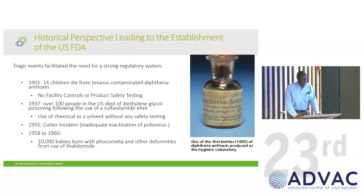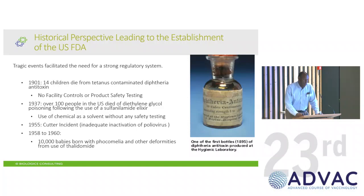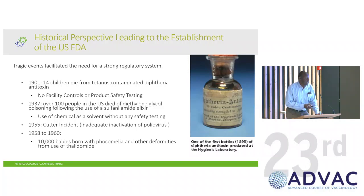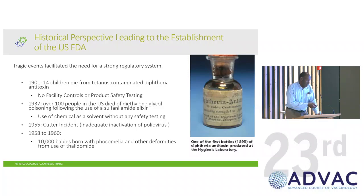Between 1958 and 1960, tens of thousands of babies died or had deformities due to thalidomide. Again, governments needed to step in and say we probably need to control or regulate some of this. These were examples of the impetus for bringing on regulations.